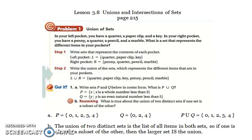In your left pocket, you have a quarter, a paperclip, and a key. In your right pocket, you have a penny, a quarter, a pencil, and a marble. What is a set that represents the different items in your pockets?